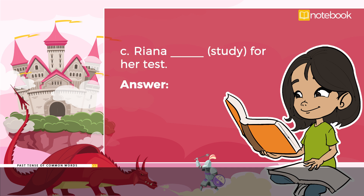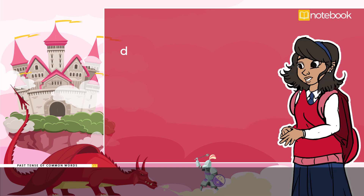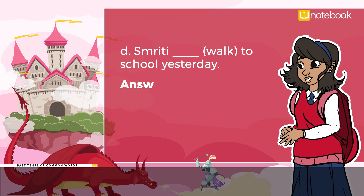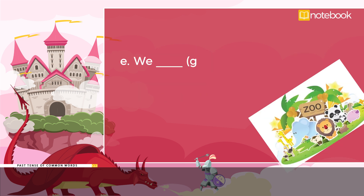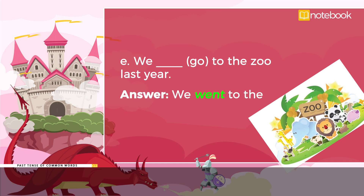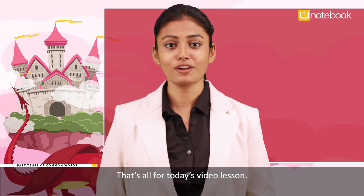C: ___ (study) for her test. Answer: Rainer studied for her test. D: Smriti ___ (walk) to school yesterday. Answer: Smriti walked to school yesterday. E: We ___ (go) to the zoo last year. Answer: We went to the zoo last year.